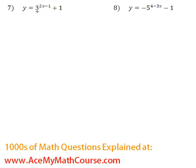Find the inverse of y equals 3 to the power of 2x minus 1 plus 1. Right away I'm going to switch x and y, because that is the inverse, and of course we want to isolate y.